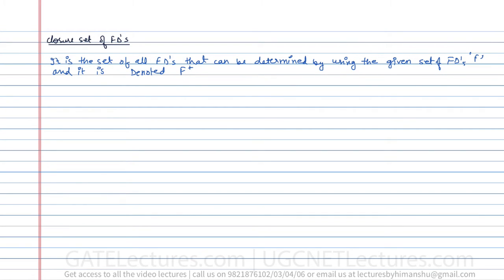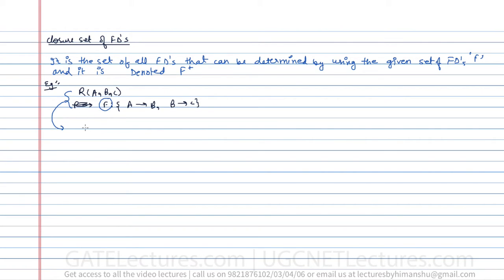There is a difference between the closure set of functional dependencies and the closure set of attributes, which was discussed in the previous video. For example, given relation R(A, B, C) with functional dependencies A→B and B→C, using these we can derive new functional dependencies like A→C, AC→B, AB→BC, and so on. All those extra functional dependencies are called the closure set of functional dependencies.